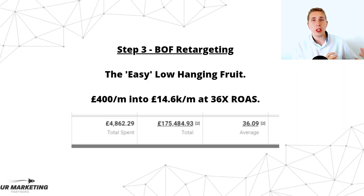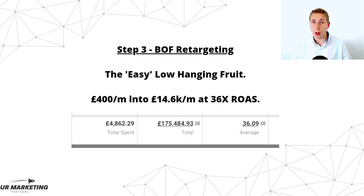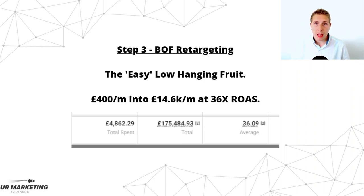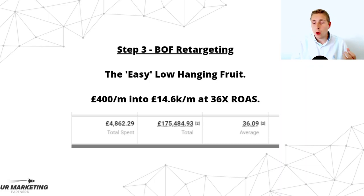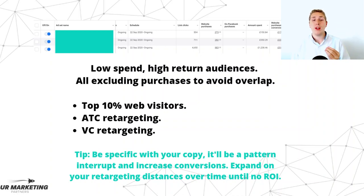Next up, once you get your top of funnel in place, you've got funnel retargeting — this is your easy low-hanging fruit. To show you the power: last 12 months, 4.8K into 175 grand at 36X return on investment. That's about 400 pound a month in and 14.6K a month back out. Incredible. And what is bottom of funnel retargeting? It's retargeting people who have almost purchased but not quite. Here are just three of the ad sets — I've blurred out the names — but these are our low spend, high return audiences.